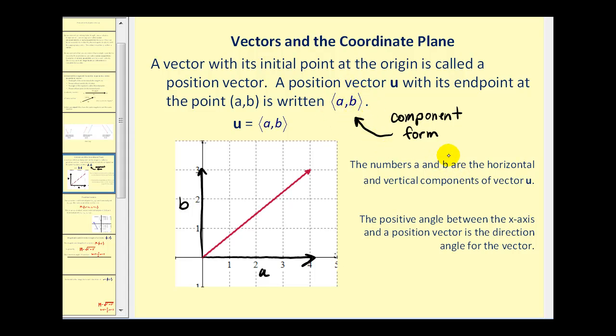The numbers a and b represent the horizontal and vertical components of vector u. This would be the horizontal component, so we can label this a. And the vertical component is here, so we can label this b. The positive angle between the x-axis and a position vector is the direction angle for the vector.